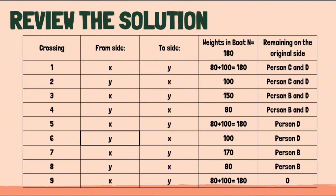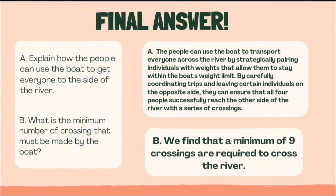To check if our answers are correct, we made a table to illustrate what happened in the scenarios. Within this table we put in the nine crossings, which route they are going, the person riding the boat according to their weight, and who remains on the original side. You may pause the video to look at it. So for the final answers: for question A, the people can use the boat to transport everyone across the river by strategically pairing individuals with weights that allow them to stay within the boat's weight limit. By carefully coordinating trips and leaving certain individuals on the opposite side, all four people successfully reach the other side. For question B, a minimum of nine crossings are required to cross the river. We have solved the second mathematical problem.